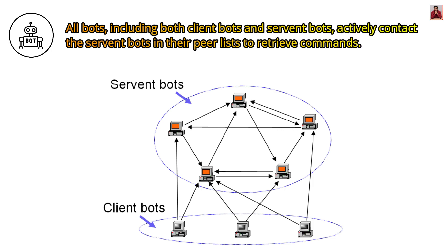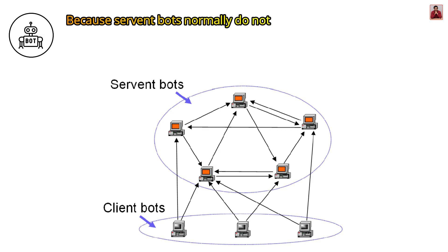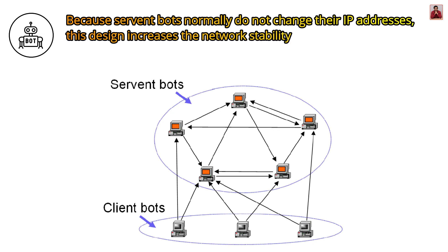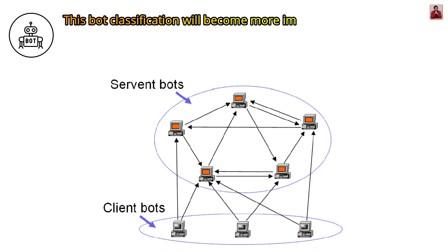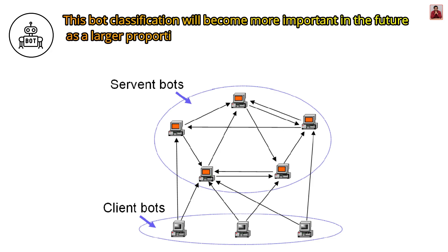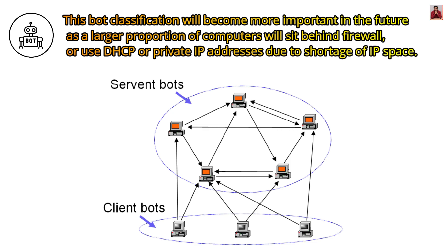All bots — including both client bots and servant bots — actively contact the servant bots in their peer lists to retrieve commands. Because servant bots normally do not change their IP addresses, this design increases the network stability of a botnet. This bot classification will become more important in the future as a larger proportion of computers sit behind firewalls or use DHCP or private IP addresses due to a shortage of IP space.